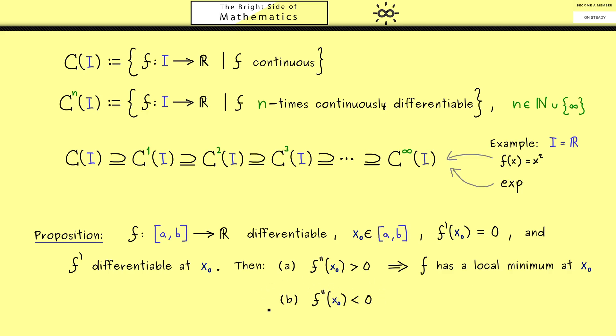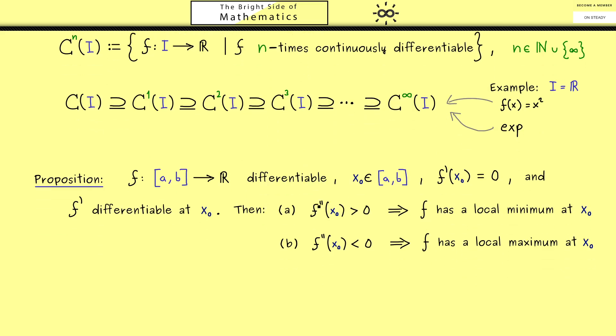Now of course we also have the other sign which gives us a sufficient condition for a local maximum at x0. So we have this implication you also should remember. Now I think you are interested in the proof of this, therefore let's do it immediately.